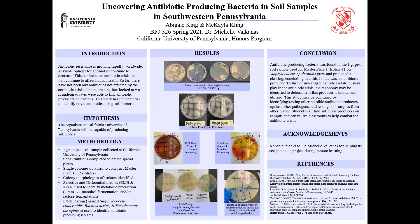There are a few future directions this research can take. One direction is to identify isolate 11's taxonomy and compare it to known producers. Another is to test the isolates against other strains to see if they are antibiotic producers against other bacteria. Lastly, we can test soil samples from a different location — another spot on Cal's campus, another campus in PA, or another location entirely.